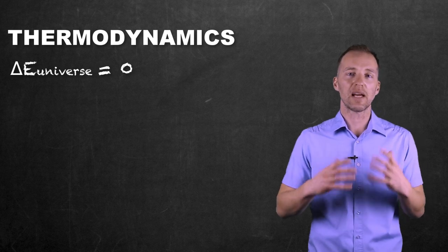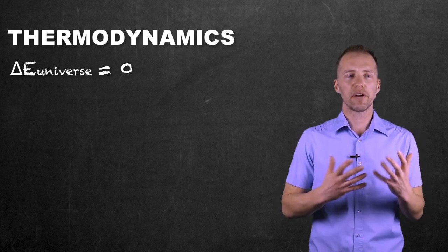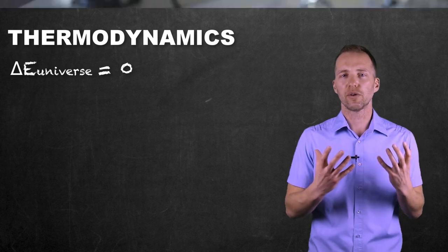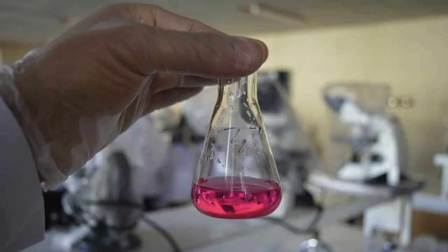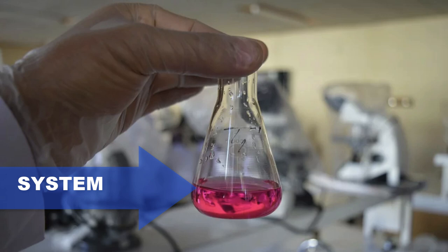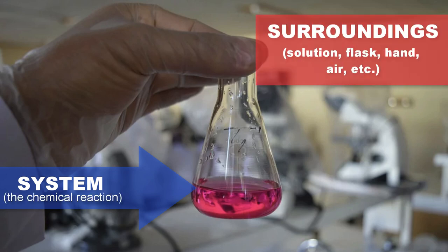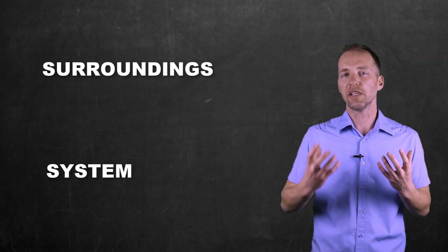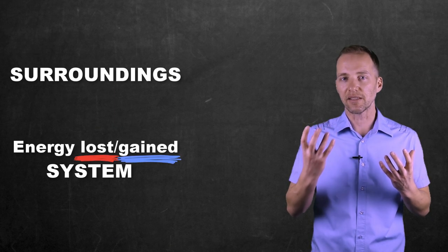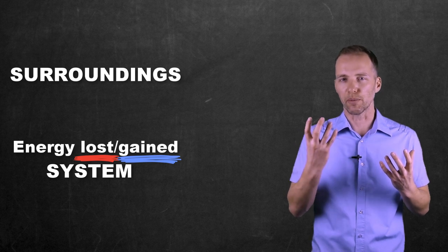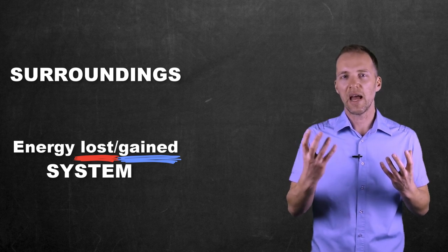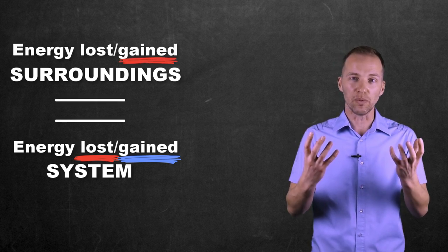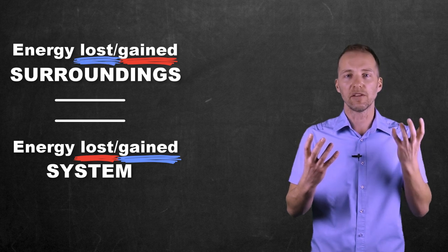When we're analyzing chemical systems, we have to understand that there are two parts to a reaction or process. There is the system itself — in simplest terms, the chemical reaction — and then there's everything else in the universe, which for us is generally just the immediate surroundings. Any energy that is lost or gained by that system must be equally gained or lost by the surroundings.